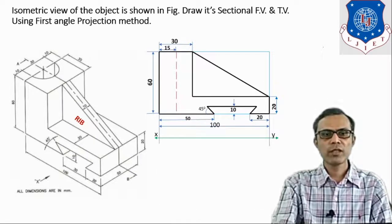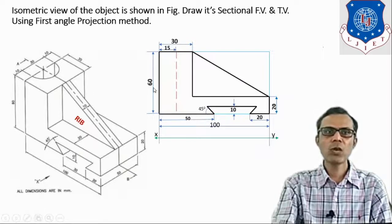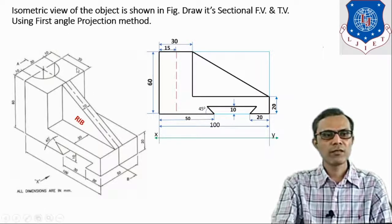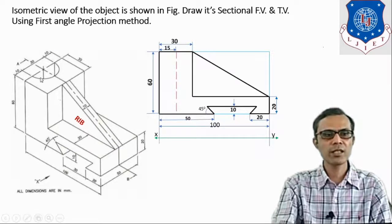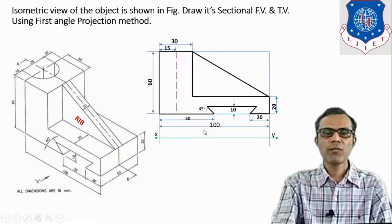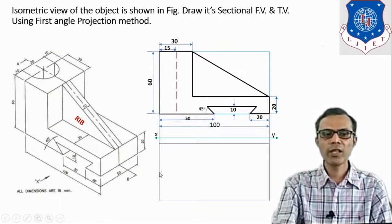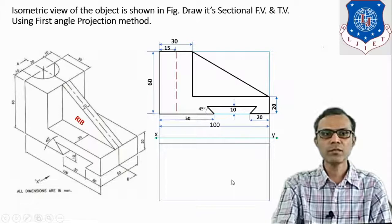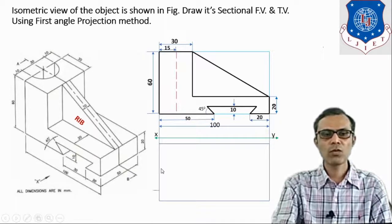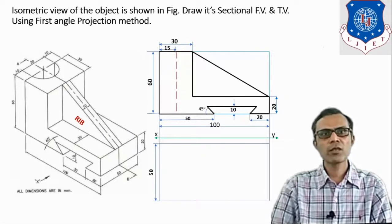Now for the top view, take the projection from the front view. In the top view we can see two dimensions: length and width. Length is obtained from the projection of the front view, and the width is 50. By taking these dimensions, draw the rectangle of 100 by 50. Draw its center line and write down the dimensions — width is 50. It is necessary to write down dimensions, but it is not necessary to repeat a dimension in the top view if it is already written in the front view.